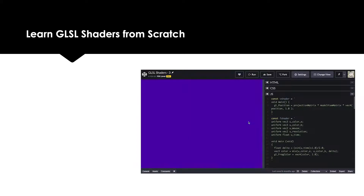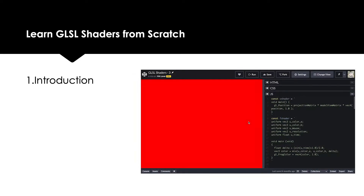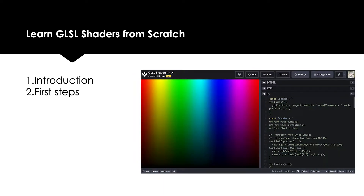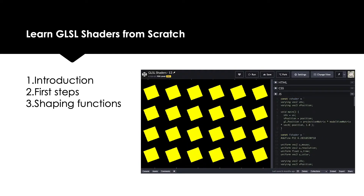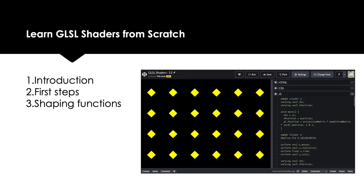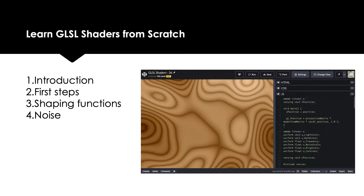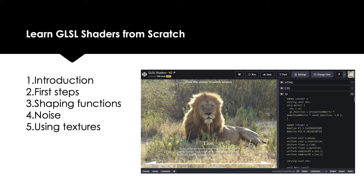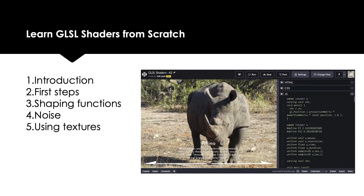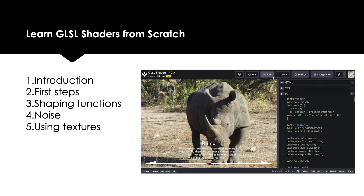The course is split into sections. Section 1 introduces some basic concepts. In Section 2 you start to write your first shaders. In Section 3 we look at shaping functions, and in Section 4 we start to look at the amazing flexibility of adding noise functions to your shader code. In Section 5 we look at showing images or textures in your shader and how you can play around with these at lightning speeds.